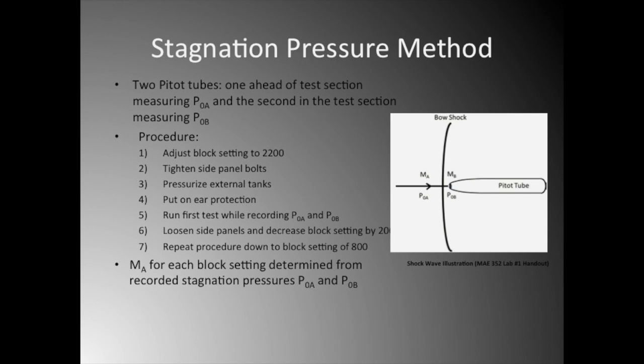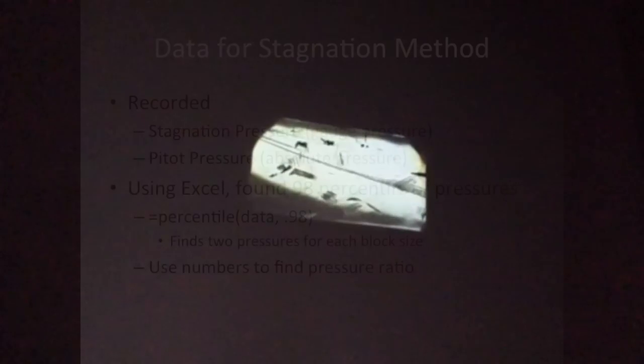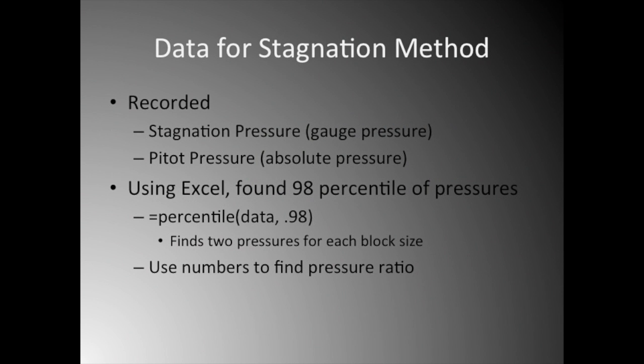The Mach number MA for each block setting can be determined from the recorded stagnation pressures P0A and P0B. The stagnation free stream pressure was recorded in gauge pressure and the P0 pressure was recorded as absolute pressure using LabVIEW. The data was exported to Excel in order to find the 98th percentile. Using the percentile formula, Excel gives a stagnation and pitot pressure for each block size.